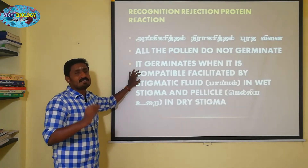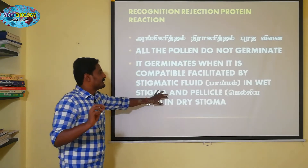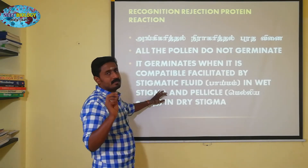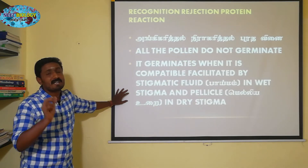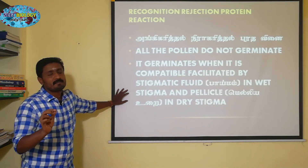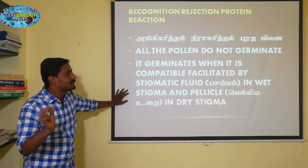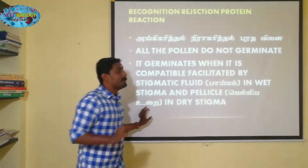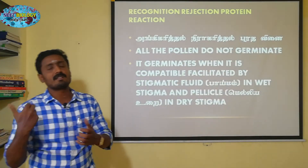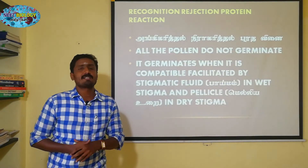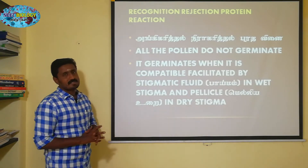If it is a wet stigma, it will produce the stigmatic fluid. In case it is a dry stigma, it will produce a pellicle. Either way, it will produce the pollen grains and then the pollen tube.